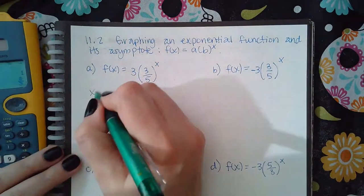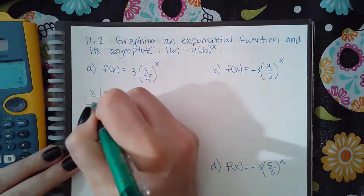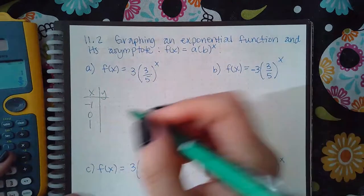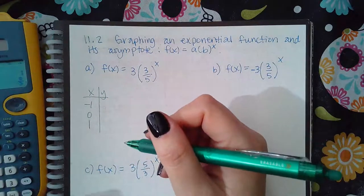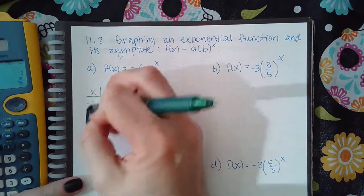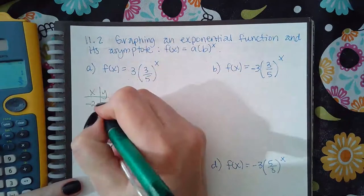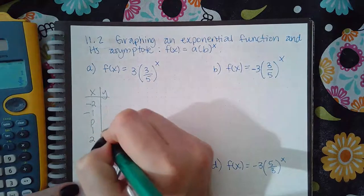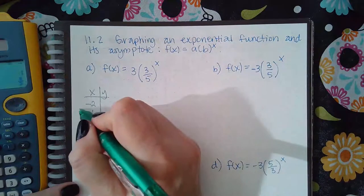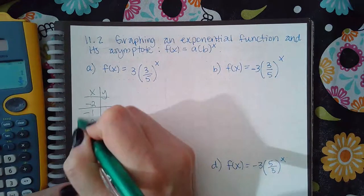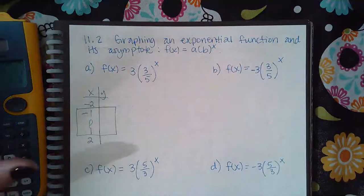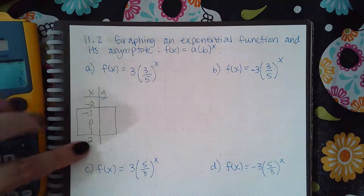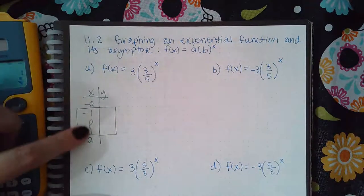So let's make our table. I like to use these values. If it makes you do five values, then just use negative two, negative one, zero, one, and two. But I think you're okay with just using the three values. If it does ask you for five values, then just use negative two and positive two as well. But I think three is okay.